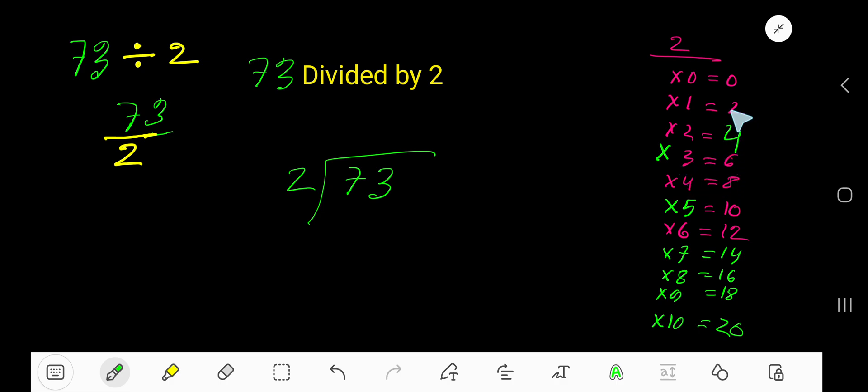To find the multiplication table of 2, just add 2 to the previous tip: 0 plus 2 is 2, 2 plus 2 is 4, 4 plus 2 is 6, 6 plus 2 is 8. 2 goes into 7 how many times? Look, 4 times is 8 which is greater, so 3 times.